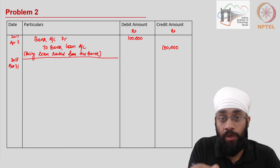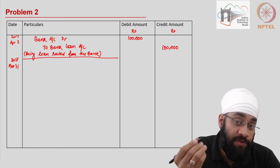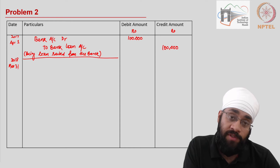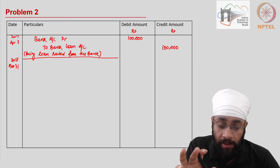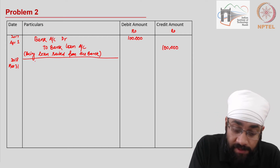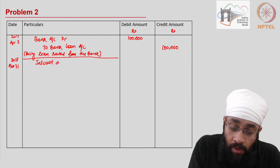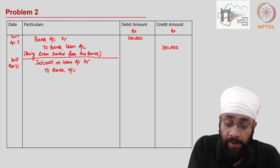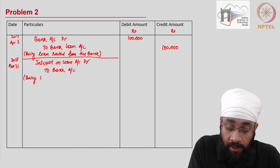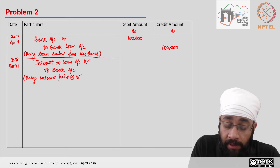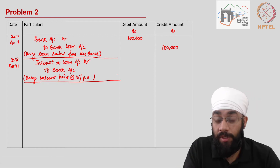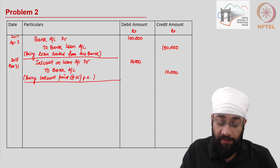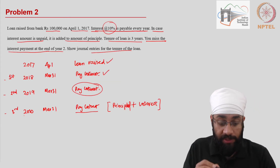The year ends on March 31, 2018, and you pay the first interest payment. This is a simple loan case — you take the loan at the beginning and pay simple interest at the end of each year with no EMIs. When you pay the interest at 10 percent, the entry is: Interest on Loan Account debit, to Bank Account credit — assuming payments go through the bank. The narration is: being interest paid at the rate of 10 percent per annum simple interest. At 10 percent on 100,000, you pay 10,000 rupees.